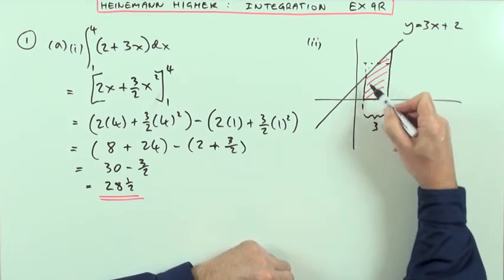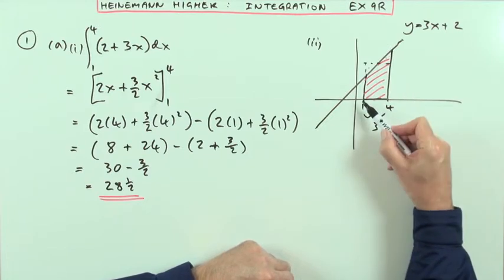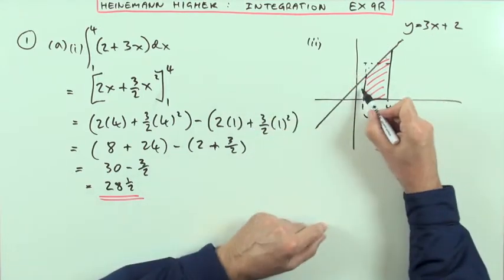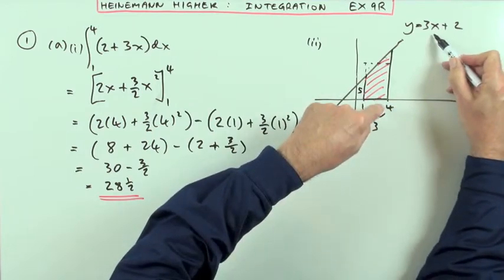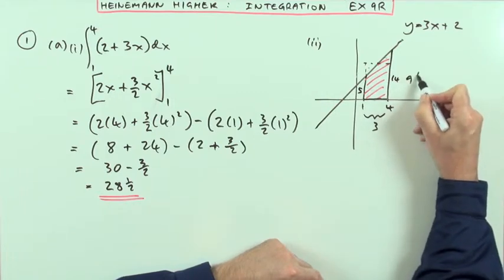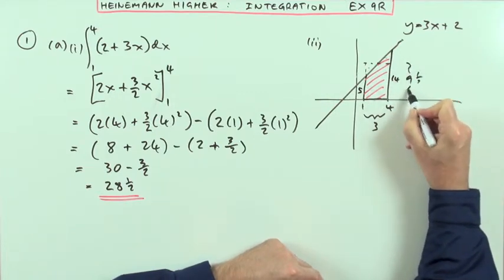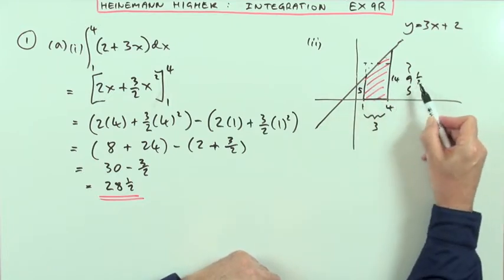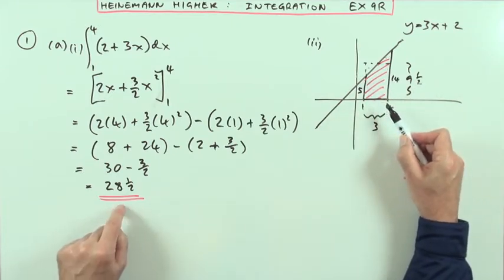The width of that rectangle would be 3. Its height would be halfway between the two heights. So that particular length is going to be used to form the y-coordinate. That's 5. 3 times 4 plus 2, that's 14. That's 19. That makes 9 1/2 then. The rectangle formed from that trapezium would be 3 times 9 1/2. And 3 times 9 1/2 is 28 1/2.